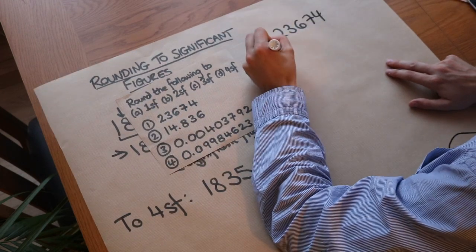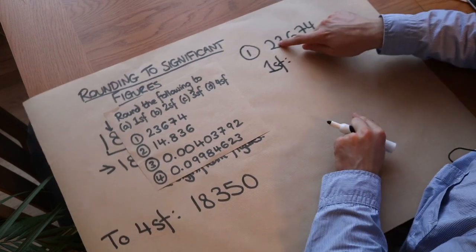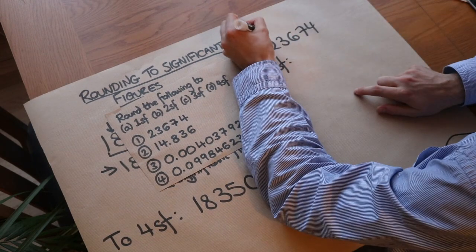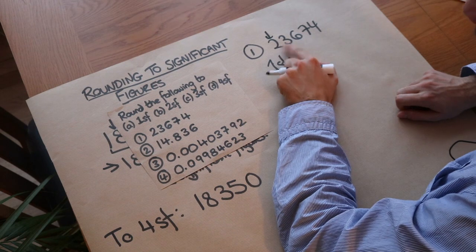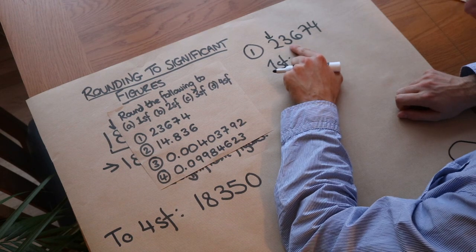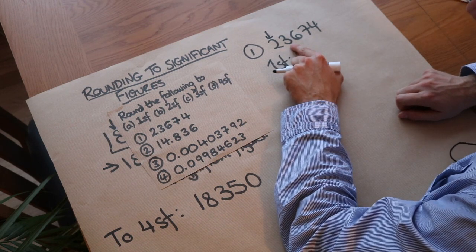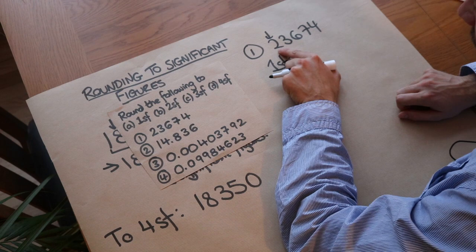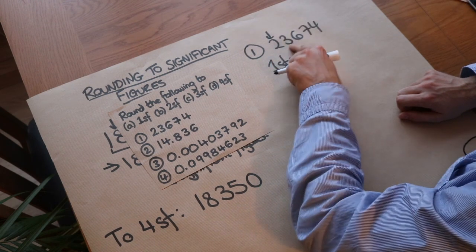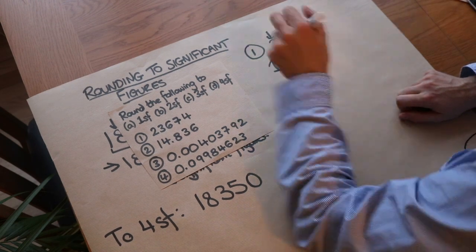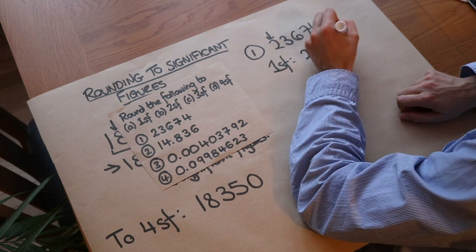To one significant figure, we only keep up to the first digit — the 2 — so we check the next digit. Is it greater than or equal to five? No it isn't, so the 2 stays as it is and everything else gets replaced with zeros, giving 20,000.